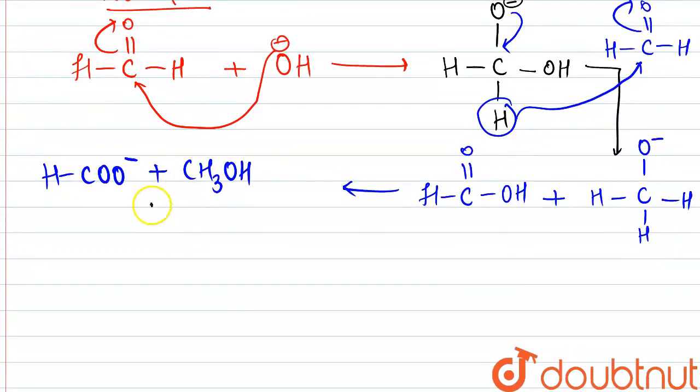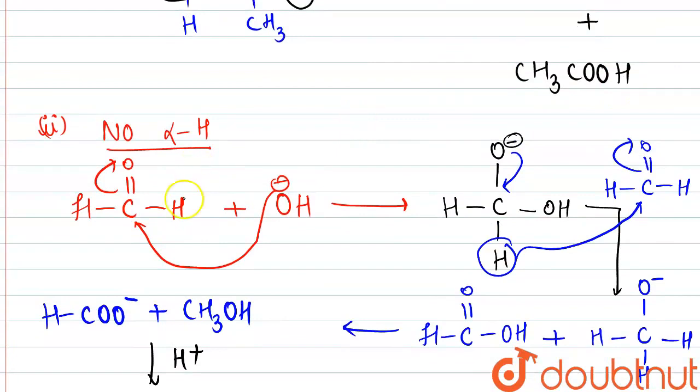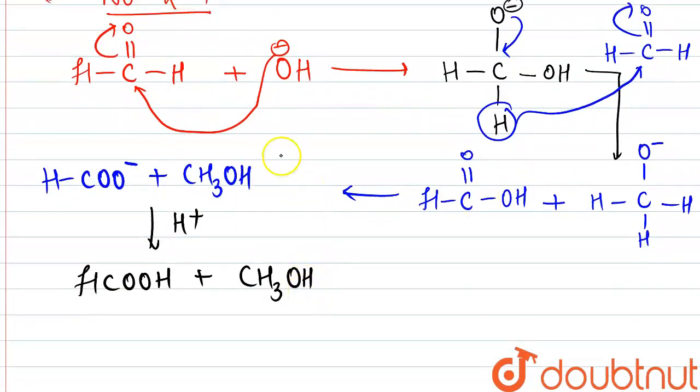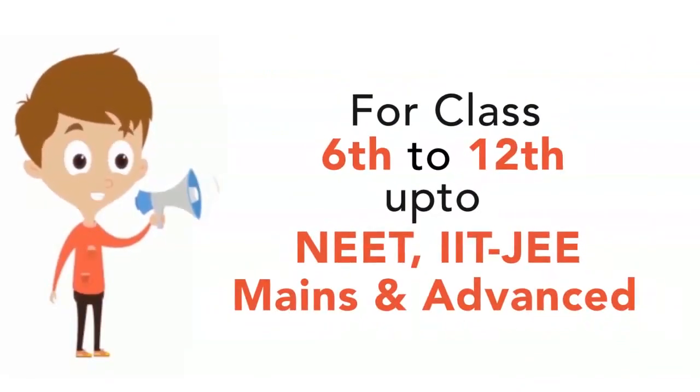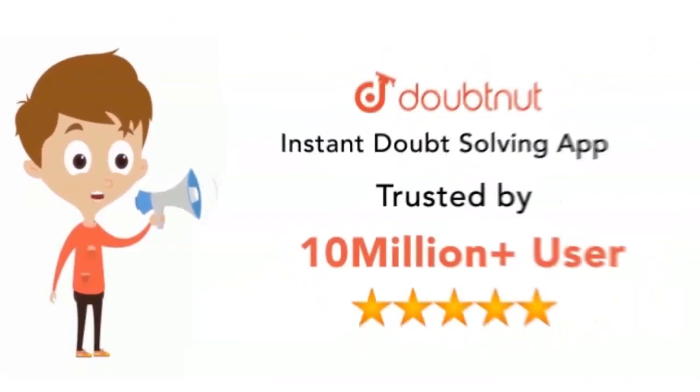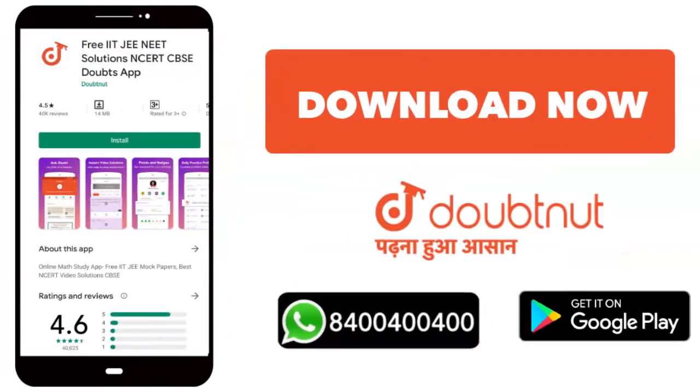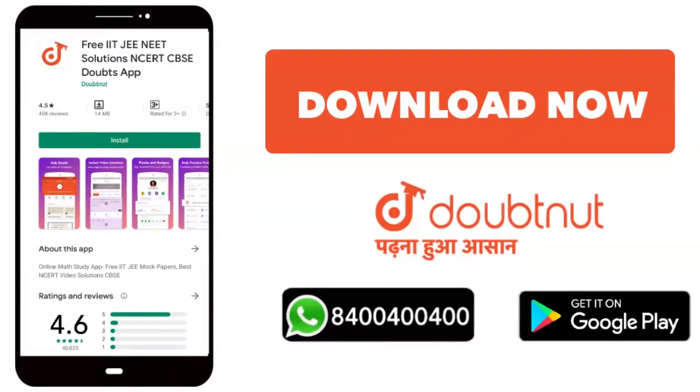So if we are further providing one proton H+, then we would be getting the products HCOOH and CH3OH.